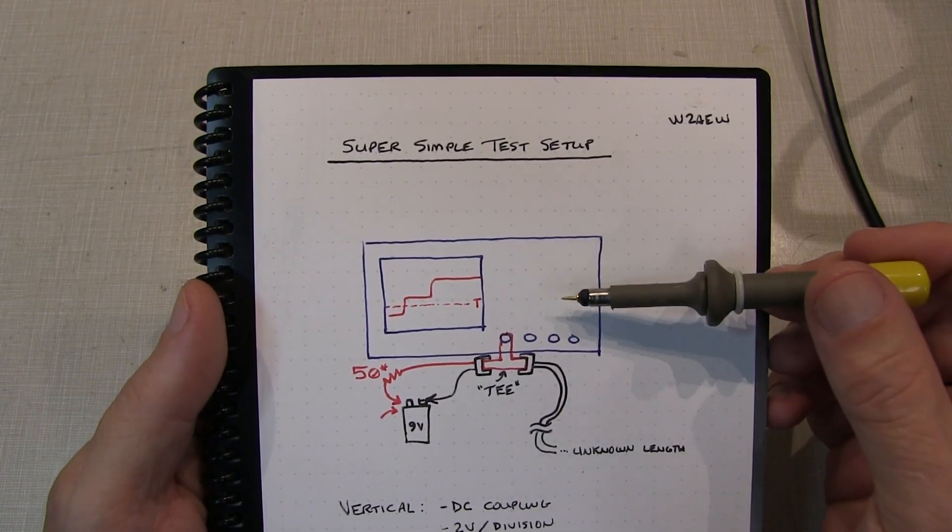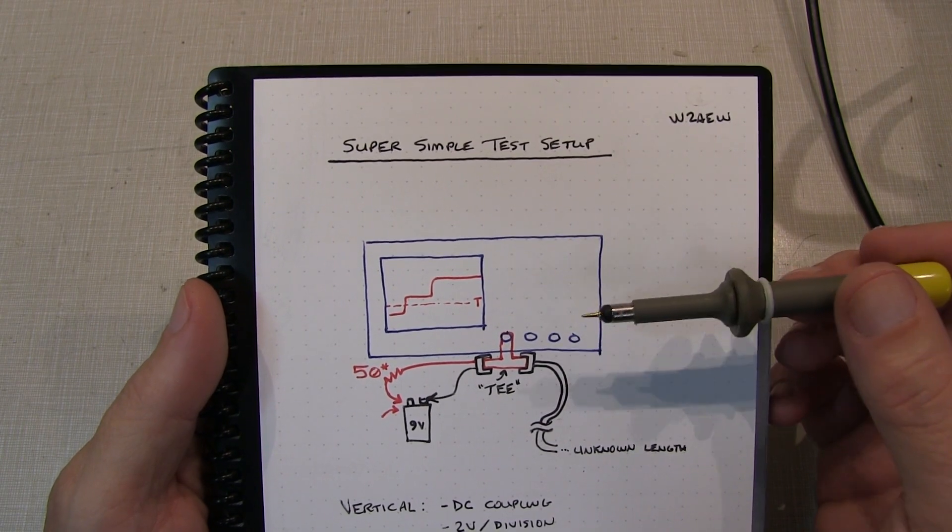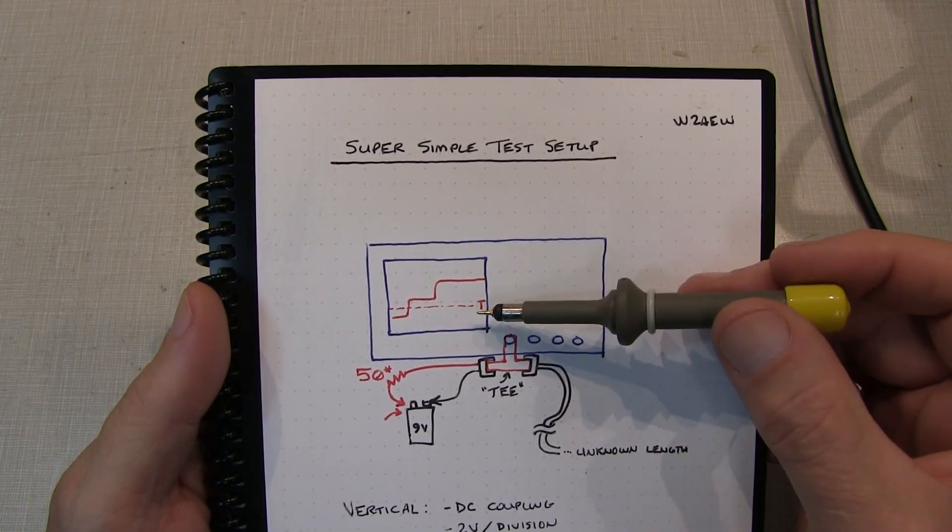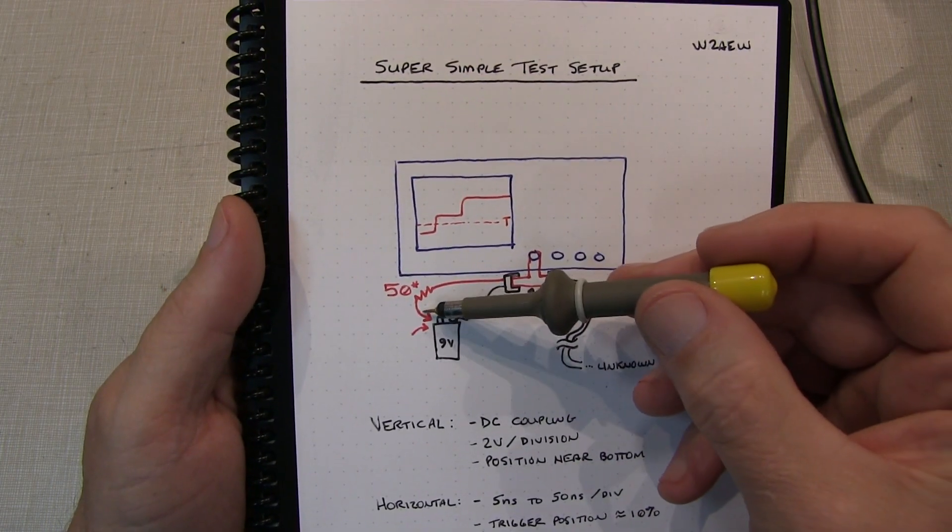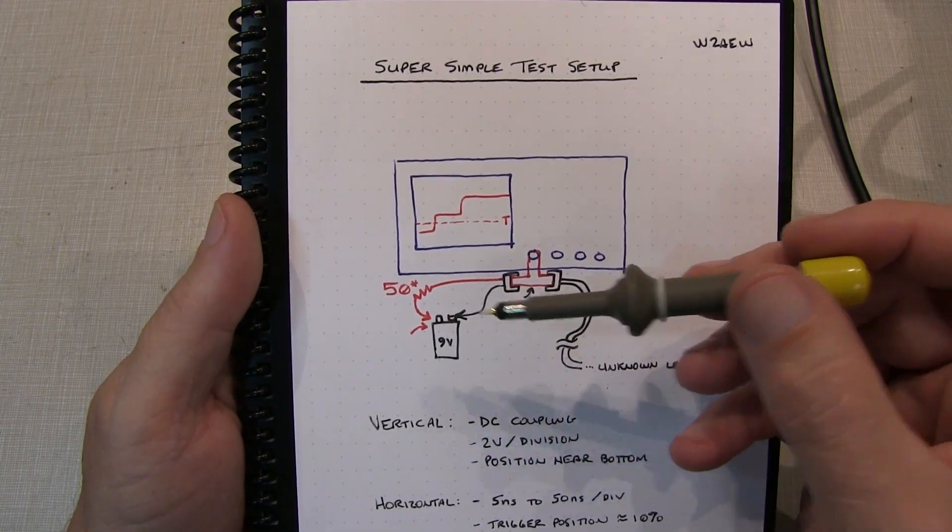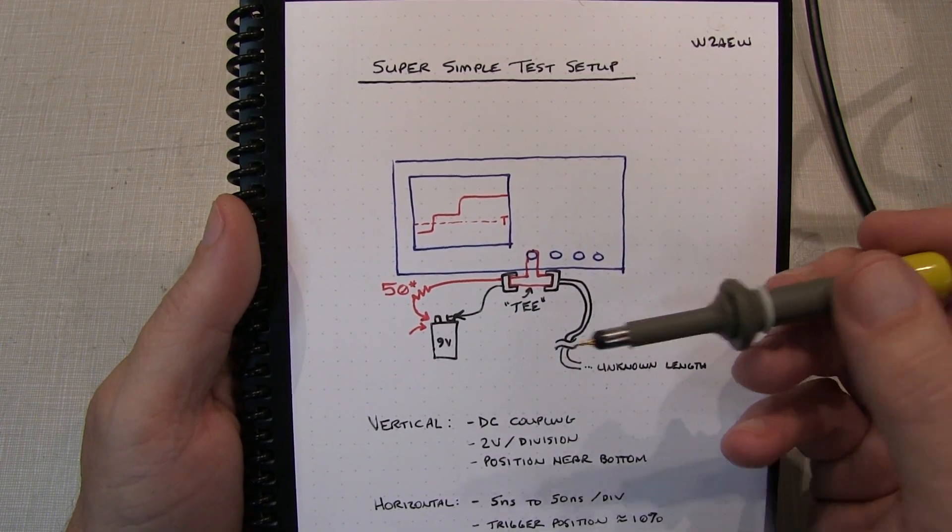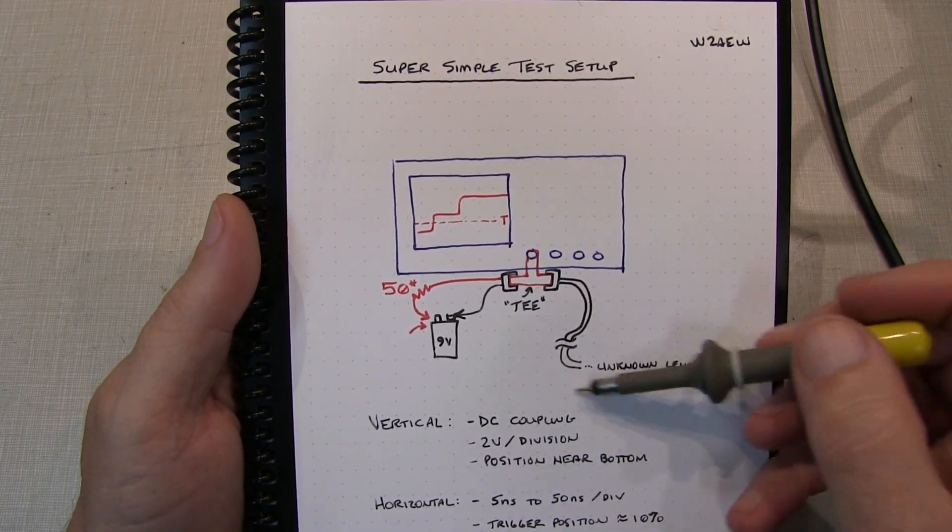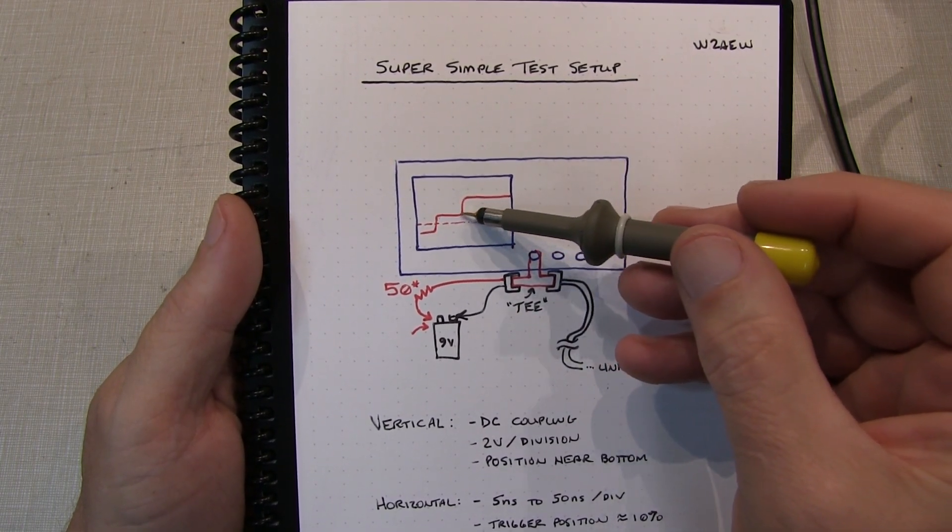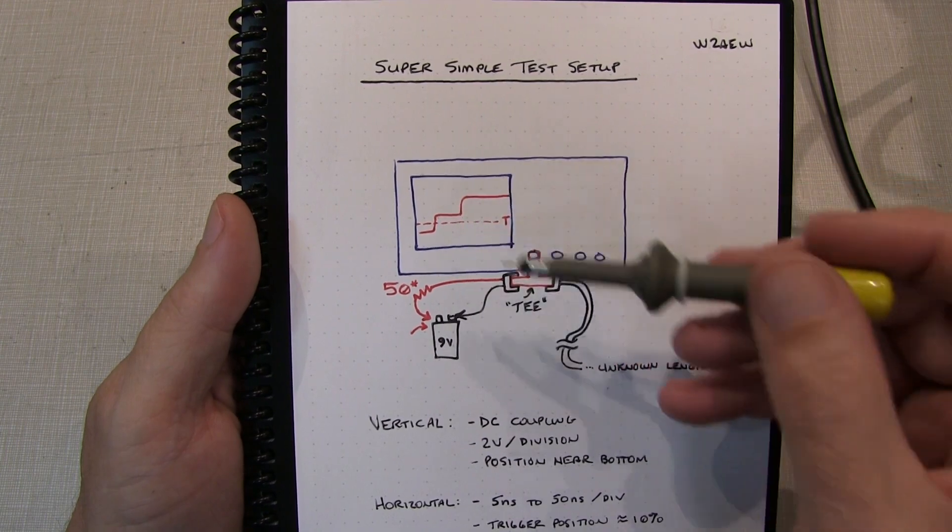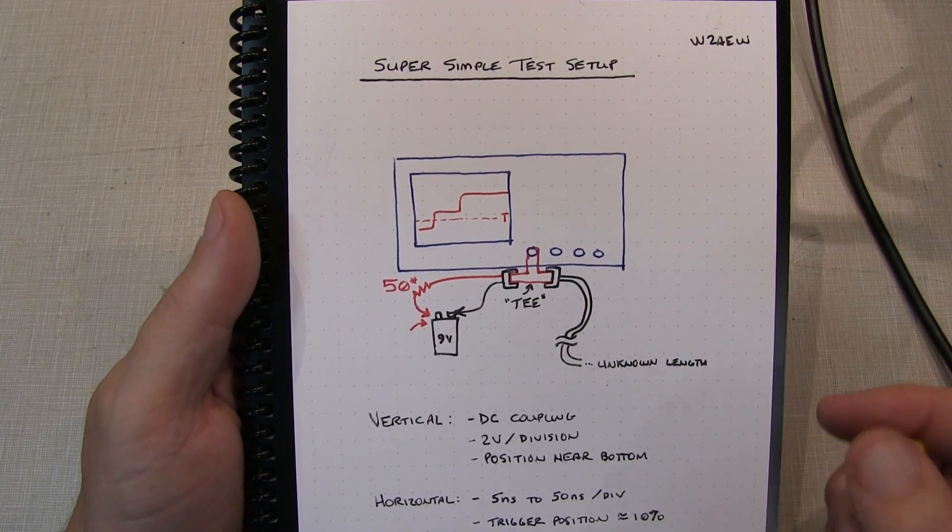And the simple idea is, set up the scope to be either in single shot or normal trigger, and adjust the trigger level so that it's up above the baseline, and simply touch the end of the resistor to the 9-volt battery. That creates a step voltage change, which then propagates down the line, reflects off the end, and then comes back. And you can actually see the injection to the line, and the reflection coming back, and use that to measure your parameters.